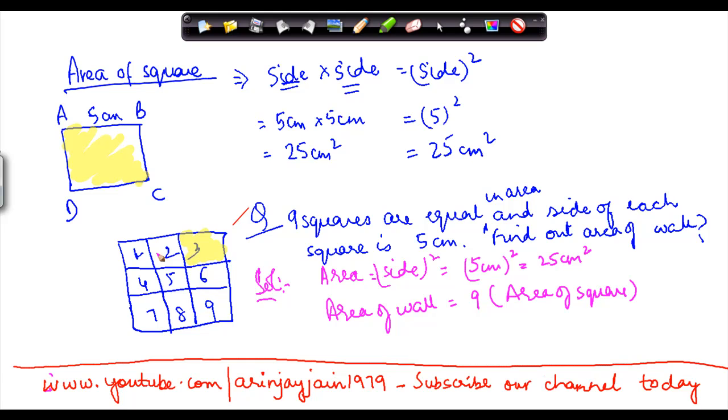So therefore either I can add the area of one of these squares nine times or I can simply multiply the area of one square by 9. I know the area of one square is 25 cm square. So therefore the area of the wall is equal to 9 into 25 cm square. When I do this multiplication I would get 225. So the area of the wall is 225 cm square.